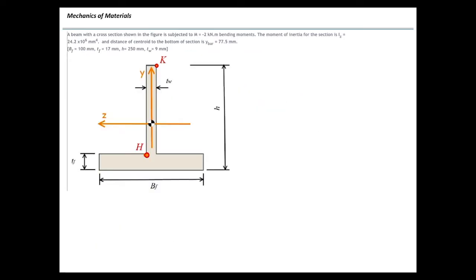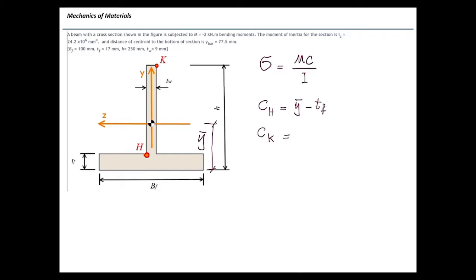The next problem is a typical bending problem for non-symmetric sections. The magnitude of the moment is given, and the moment of inertia and location of the centroid are also provided. The centroid to the bottom is given as y-bar. We just need to plug that into sigma equals mc over i. The problem simplifies to finding the c values: distance from centroid to point h is y-bar minus the thickness of the bottom flange, and distance to the top is h minus y-bar.